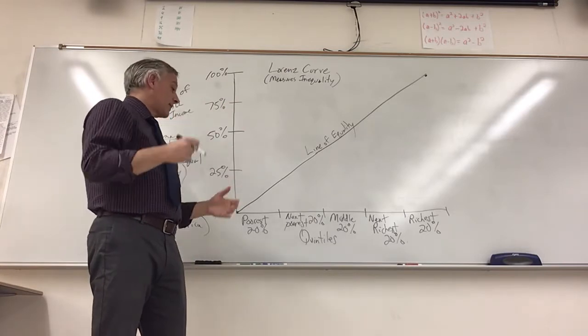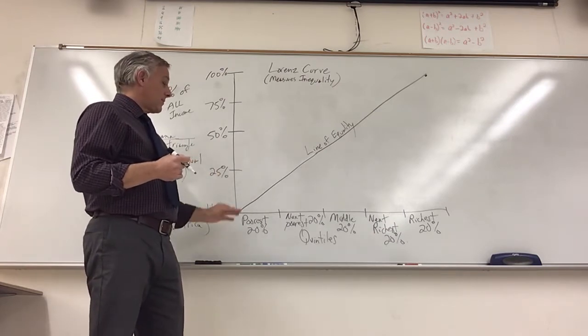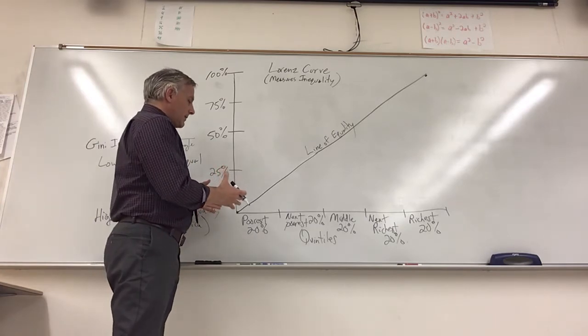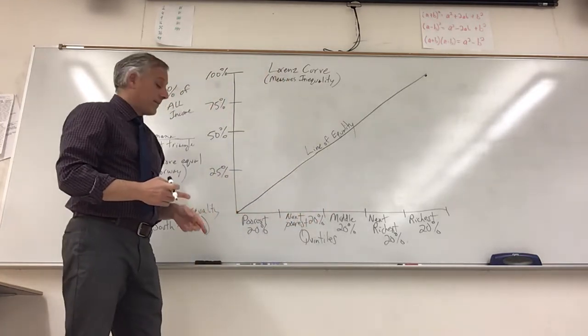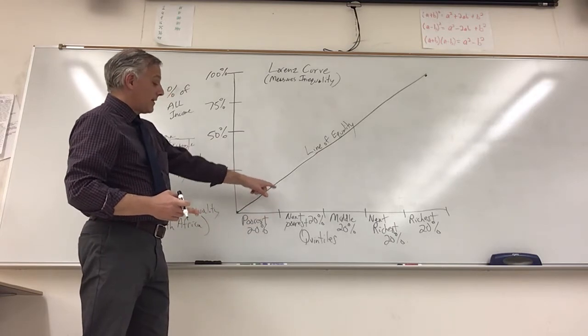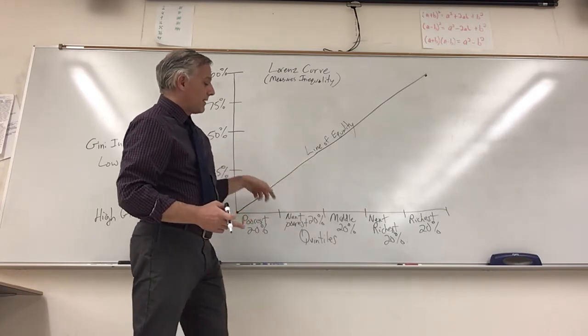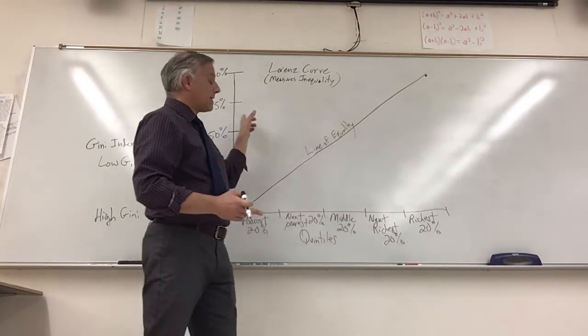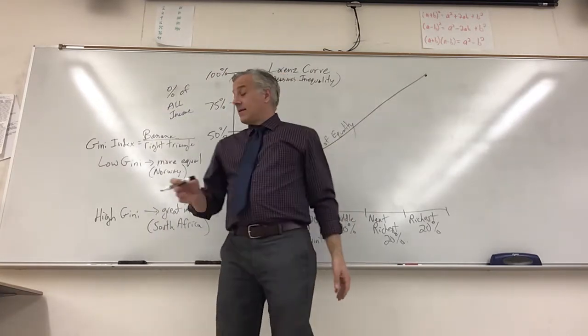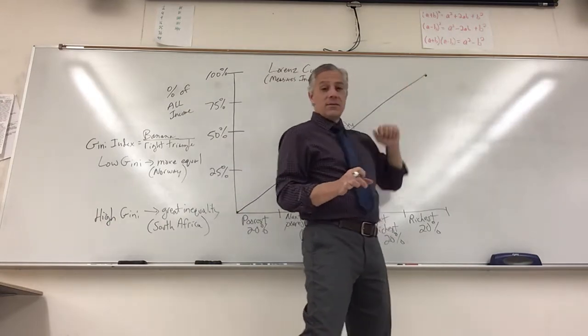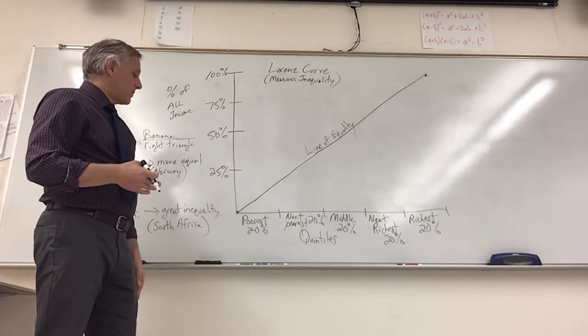I'll get back to the Gini coefficient at the end because it's easier to understand once we put this curve up. First of all, we have this line of equality, which is if every one of these groups made the same amount of money. The poorest 20% would get 20% of the income. If we added the next 20% to that, the 40% would make 40% of the income, and if we added the next group onto that, the 60% would get 60% of the income. In other words, this would represent if every group made the same amount of money, homeless person to Jeff Bezos, everybody gets the same amount of money. So it's a mythical line, but it's something to compare to.